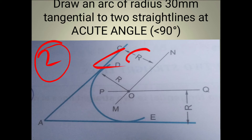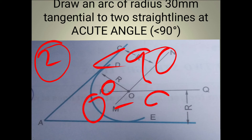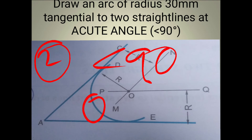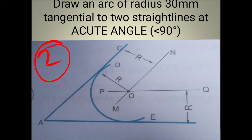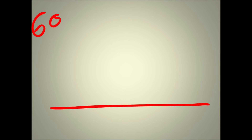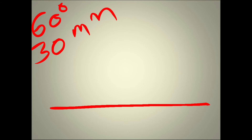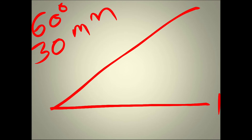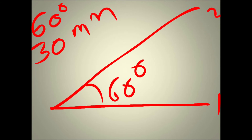Coming to Model Number Two: the two straight lines are drawn at an angle below 90 degrees. For example, I have taken angle 60 degrees — that is the acute angle. The two straight lines are drawn at 60 degrees and radius is given as 30 mm. This 60 degree angle is what we call an acute angle.